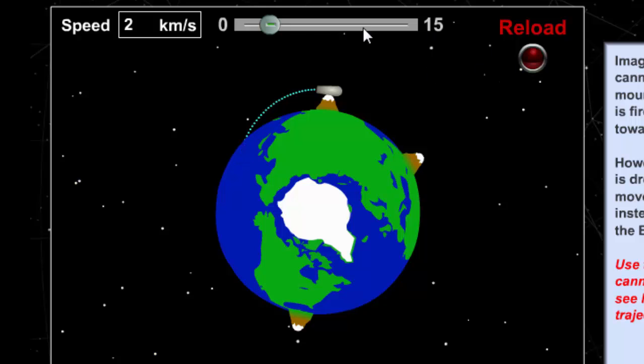Now let's give it more speed. Let's go to 4 kilometers per second, which is around 3.2 miles per second, and let's fire. You can see the cannonball went further distance. Let's go to 6 kilometers per second, reload and fire, and you can see the cannonball went even further.